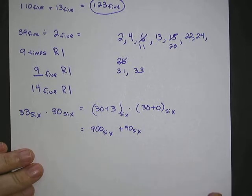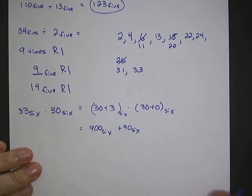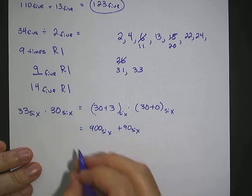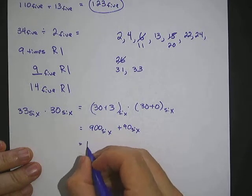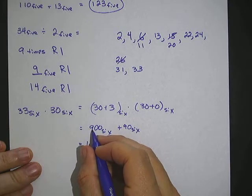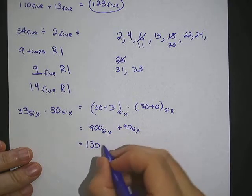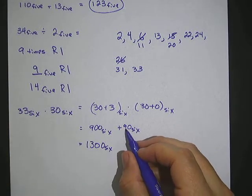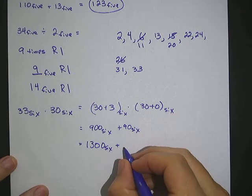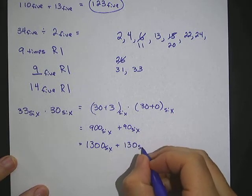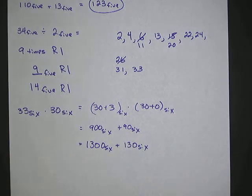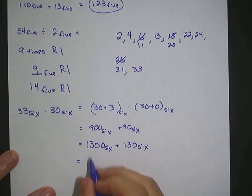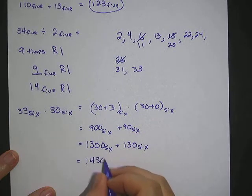The 9s can't be written in base 6, so since we're in base 6 we subtract 6 from each 9-digit and add 1 to the digit to the left. For 900: subtracting 6 from the 9 gives 3, and we add 1 to get 1300 base 6. For 90: same process gives us 130 base 6. Adding 1300 base 6 plus 130 base 6, we get 1430 base 6.